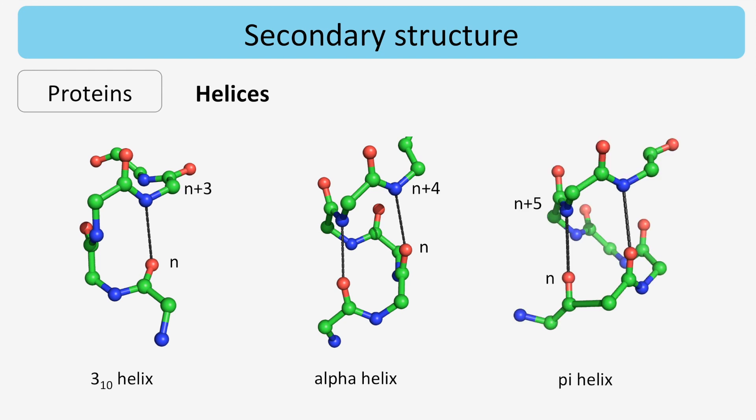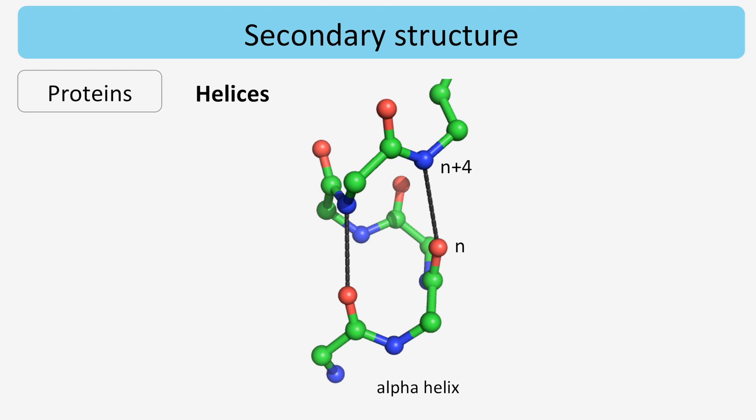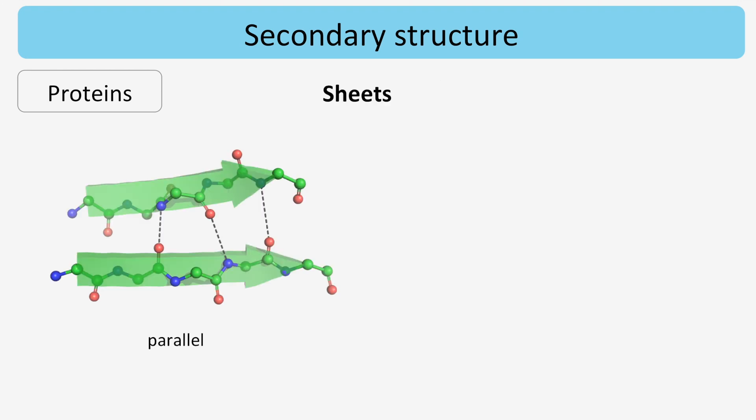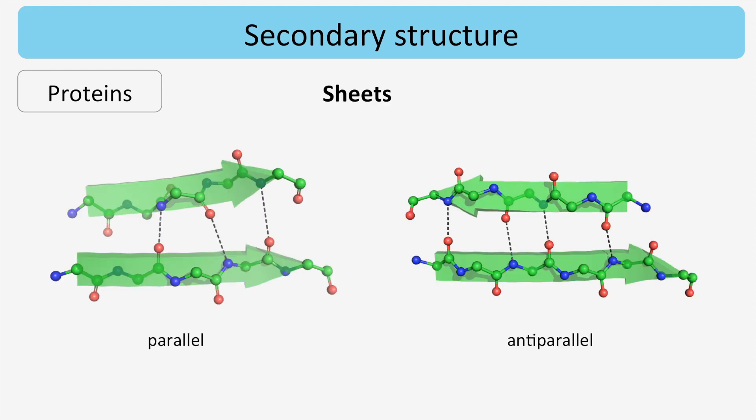For example, the most common helix is the alpha helix, with hydrogen bonds between the peptide units of residue N and residue N plus 4. Sheets can be parallel or anti-parallel, depending on the direction of the main chain.